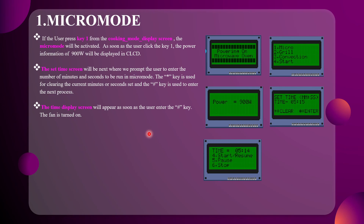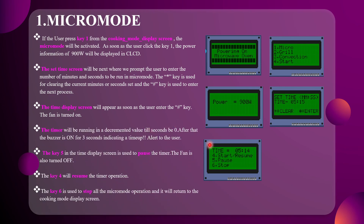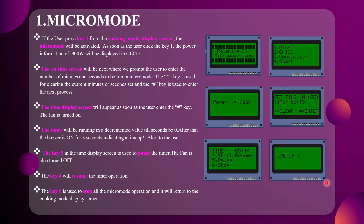As soon as we press the hash key, it goes to the time display screen and the fan on the board is turned on, indicating the microwave oven is running. The timer decrements until it reaches zero. After that, the buzzer turns on for three seconds and a time-up message is displayed. In the time display screen, key 5 is used to pause the timer, and key 6 stops the operation and returns to the cooking mode display screen.